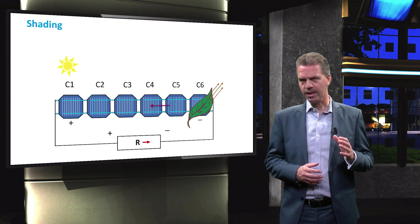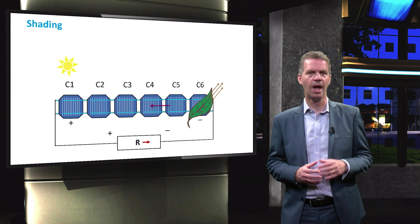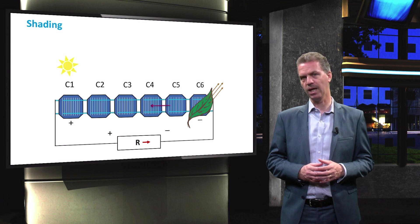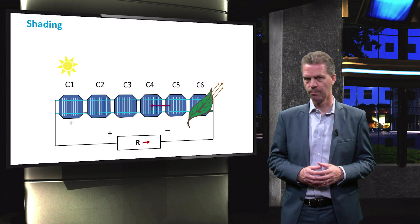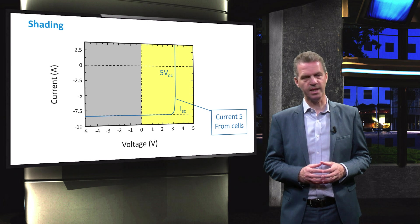This seems harmless, but it can have significant consequences for the output of the solar module, and can even cause overheating if no measures were taken. We will demonstrate this in a current-voltage graph of these six cells.